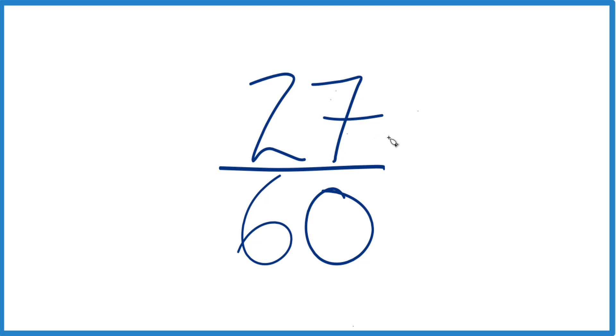When we want to simplify a fraction, we need to find a common factor. That's a whole number that goes evenly into 27 and 60.